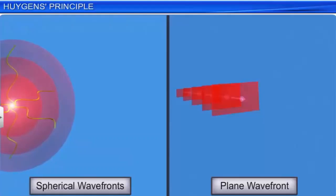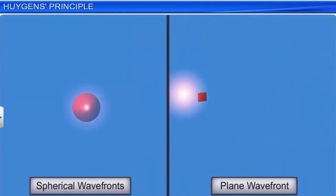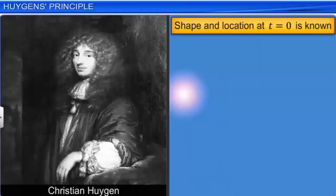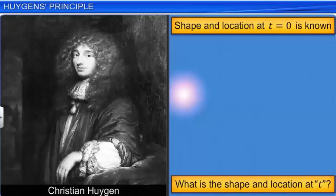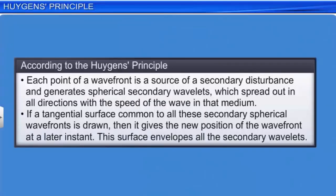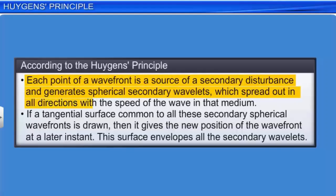Note that a wave front is a surface of constant phase. If a particular wave front is a locus of points with maximum amplitude, it continues to be like that as it propagates through the medium. Christian Huygens proposed a geometrical method known as the Huygens Principle for finding the shape and location of a wave front at some instant from the knowledge of the shape and location of the same wave front at an earlier instance. According to Huygens Principle, each point of a wave front is a source of a secondary disturbance and generates spherical secondary wave fronts, which spread out in all directions with the speed of the wave in that medium.